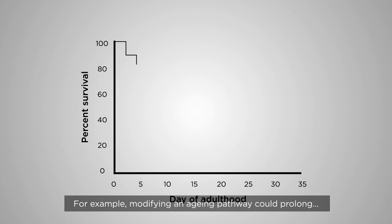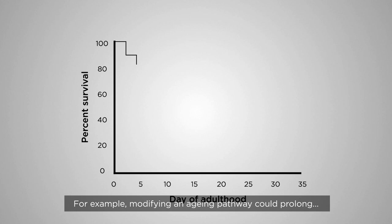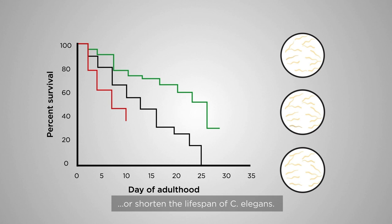For example, modifying an ageing pathway could prolong or shorten the lifespan of C. elegans. The time taken for the C. elegans to die can be expressed as a lifespan curve.